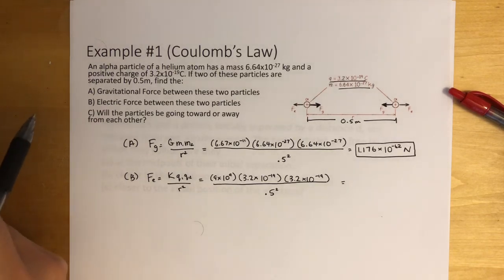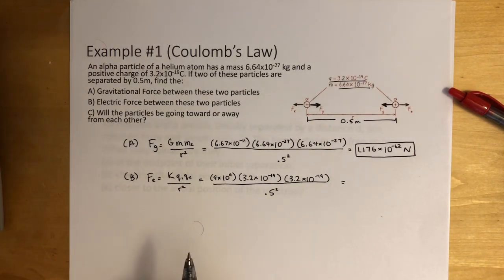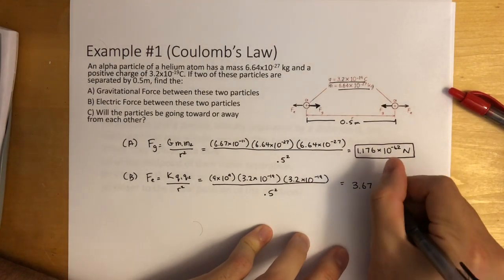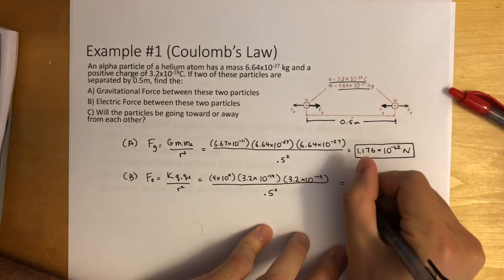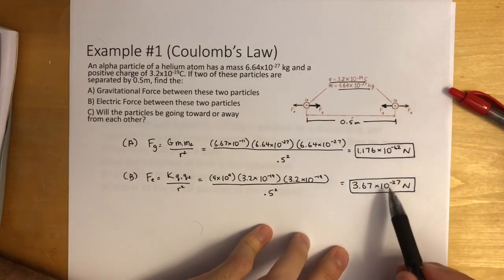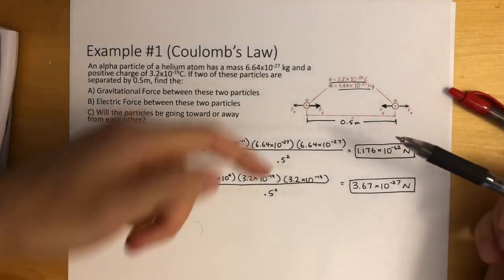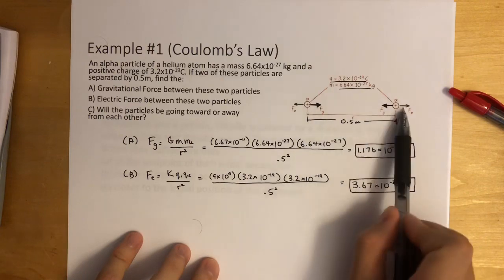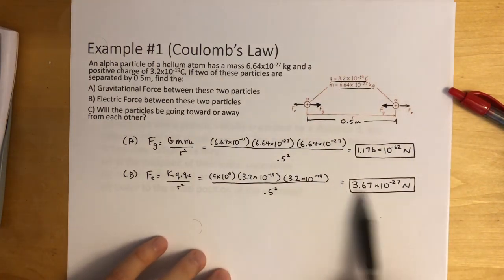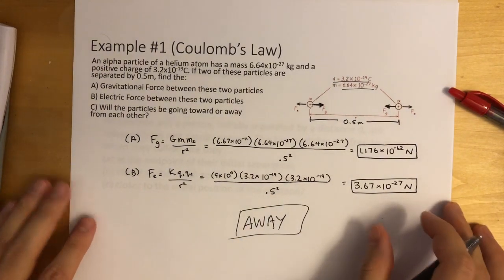This is similar to the universal gravitation formula, except instead of planets, we're talking about atoms and electrons. The electric force is approximately 3.67 times 10 to the negative 27 Newtons. This is still very small, but it's many, many times stronger than the gravitational force — gravity had 62 zeros in front, this only has 27. Since they're both positive, the electric force pushes them apart, and since it's far stronger than gravity, the particles will be moving away from each other.